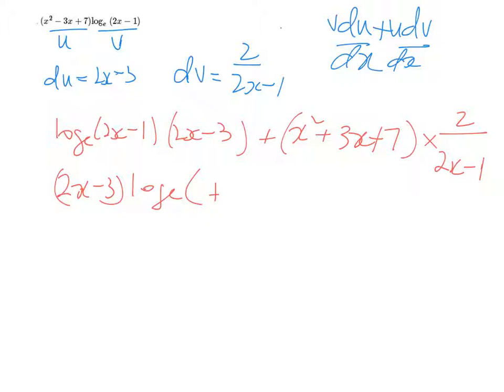So here, let me fix this up. Log base e of 2x - 3, plus 2 times x² + 3x + 7 over 2x - 1.